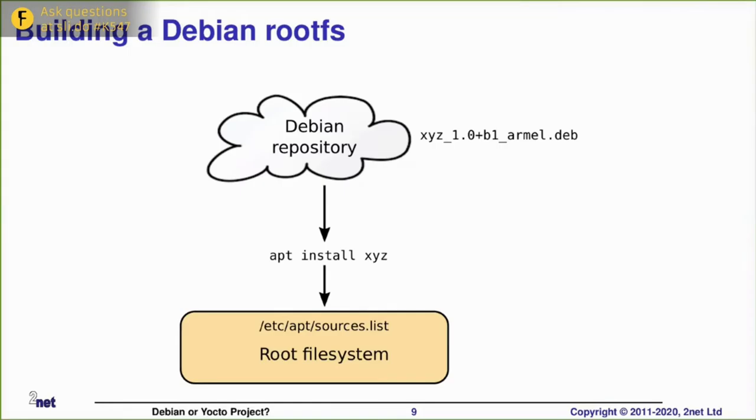If you're using Debian, the typical approach is to take a root file system which you got with a board, Raspbian for example. Then you can use commands like apt install to install packages. That will go to the list of upstream repositories in your /etc/apt/sources.list file. It will query the repository looking for a file, typically the name xyz, underscore some version number, underscore the architecture, and then .deb. And you can do something very similar with Fedora, except those will be RPMs and you'll be doing a DNF install or something.